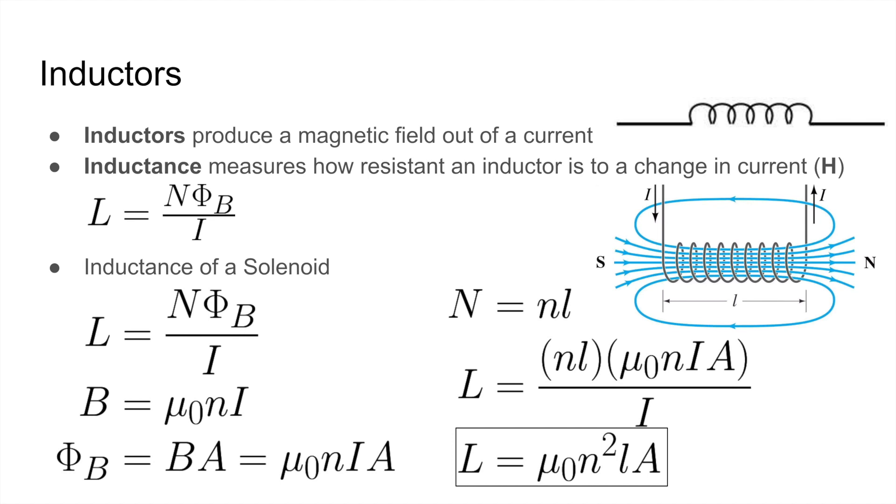because n is the number of turns per meter. So if we plug those all in, we get L equals small nL times μ0 times N times I times A all over I. And if we simplify this, we get L equals μ0 N squared L A.